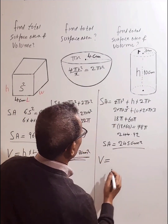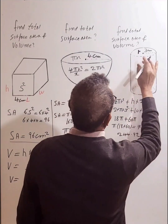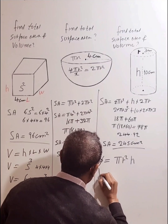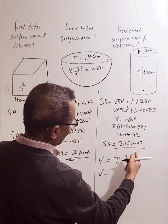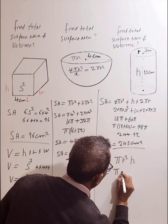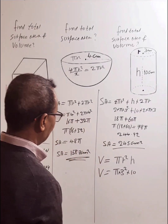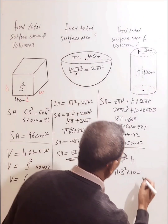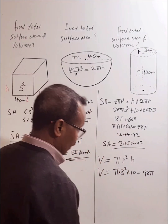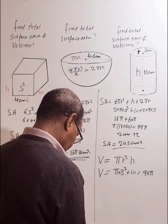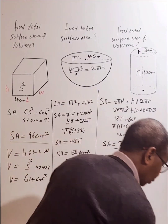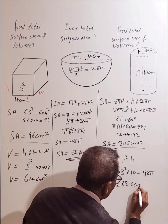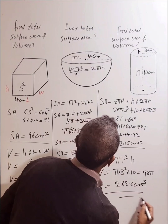Finally, the volume of the cylinder. The formula is V = πr²h, where r is the radius and h is the height. With r = 3 and h = 10: V = π × 3² × 10 = π × 9 × 10 = 90π. Calculating: 90 × 3.14 ≈ 282.6. So the volume of the cylinder is 282.6 cm³. Thank you very much.